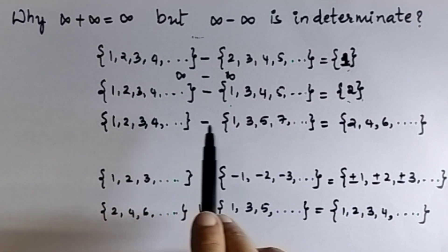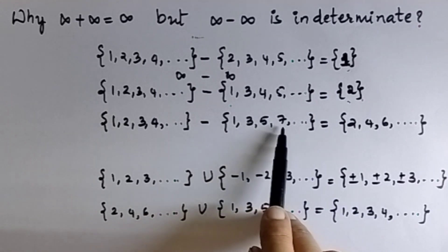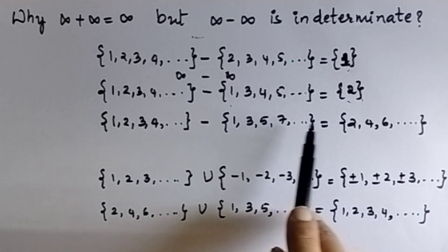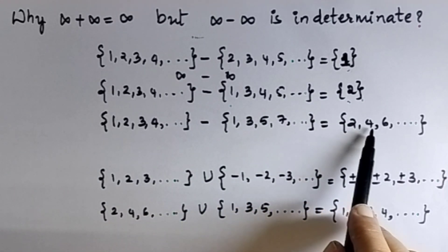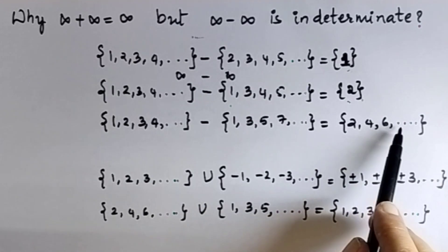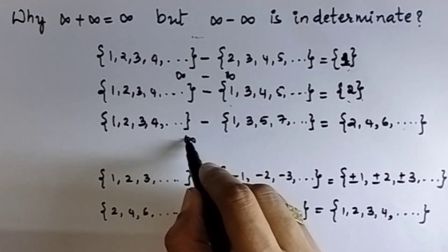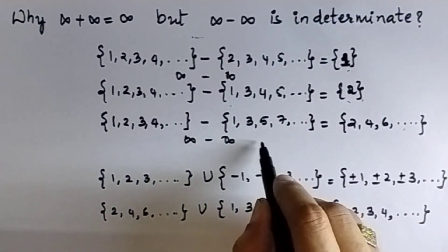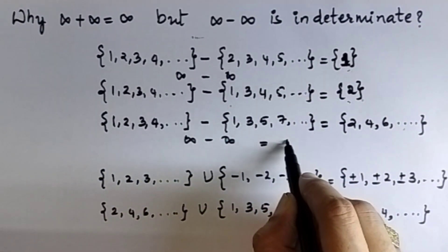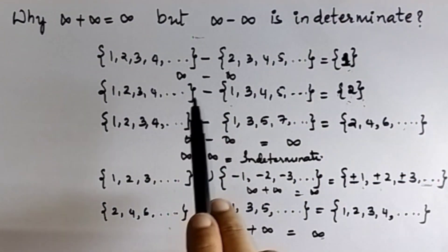Consider the set of all natural numbers 1, 2, 3, 4, and so on. From this set, I will subtract the set of all odd natural numbers. That gives you the set of all even natural numbers. So in this case, infinity minus infinity equals a set that is infinite.